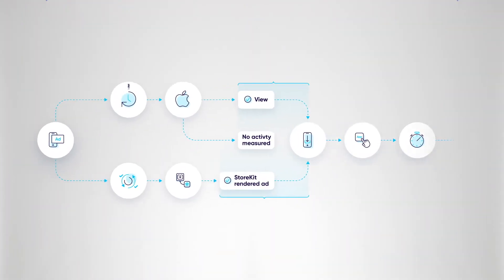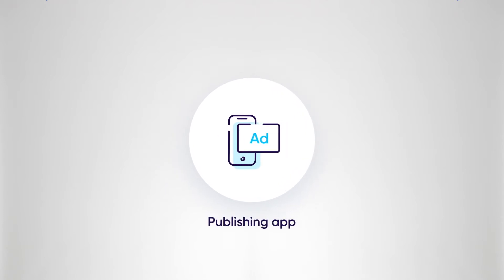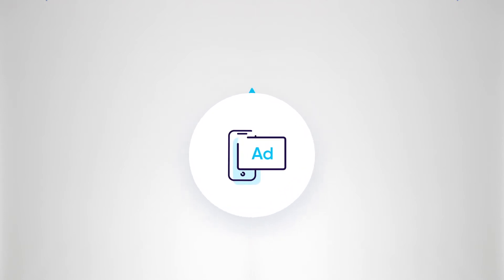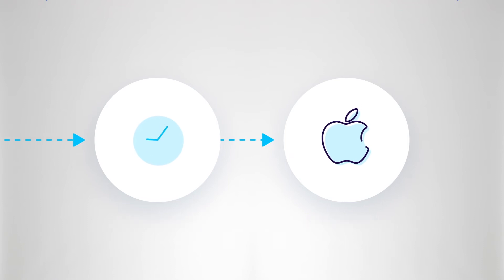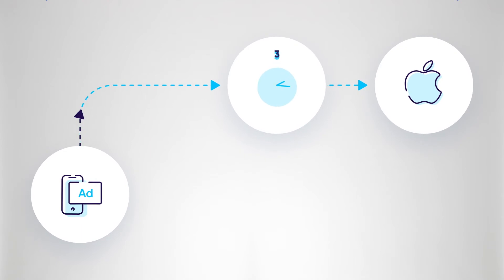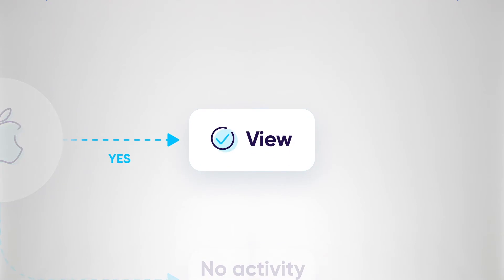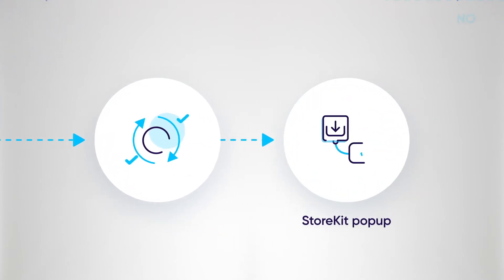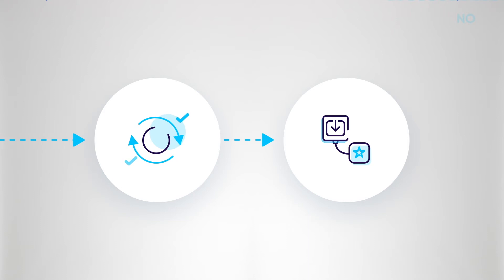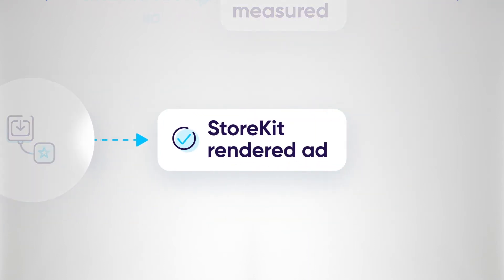Now we're going to put all the pieces together by taking a look at the SKAdNetwork flow and how it works. An SKAdNetwork ad is displayed in a publishing app. As soon as the ad is displayed, the publishing app starts the three-second timer and notifies SKAdNetwork that it has started. If the ad is displayed for at least three seconds, the publishing app notifies SKAdNetwork that the timer is up, and this activity is recorded as a successful view. If the user engages in some predetermined way with the ad, the publisher renders the advertised app's StoreKit, and SKAdNetwork registers that the StoreKit was rendered successfully.